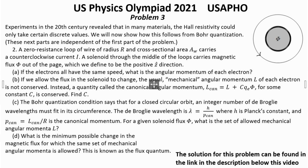Part 2: A zero resistance loop of wire of radius R and cross-sectional area AW carries counterclockwise current I. A solenoid through the middle of the loop carries magnetic flux Φ out of the page, which we define to be the positive Z direction. Question A: If the electrons all have the same speed, what is the angular momentum of each electron?